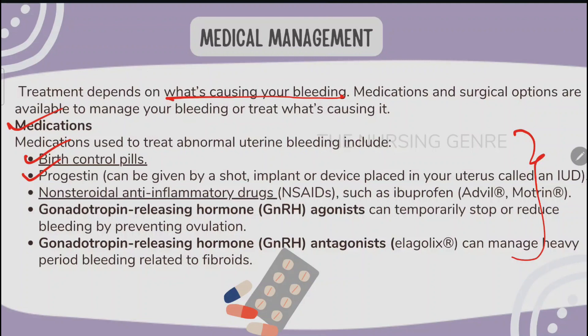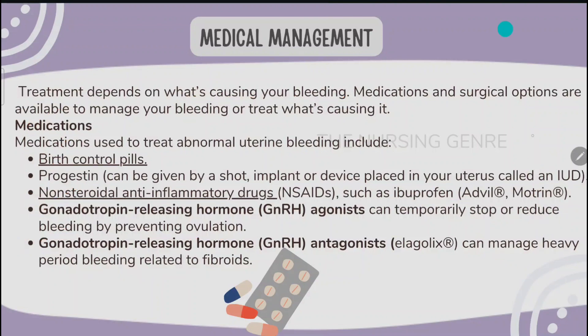Medical treatment options include: birth control pills; progestin, which can be given by shot, implant, or an intrauterine device (IUD); non-steroidal anti-inflammatory drugs (NSAIDs) such as ibuprofen; and gonadotropin-releasing hormone (GnRH) agonists, which can temporarily stop or reduce bleeding by preventing ovulation. GnRH agonists and antagonists can also manage heavy bleeding related to fibroids.